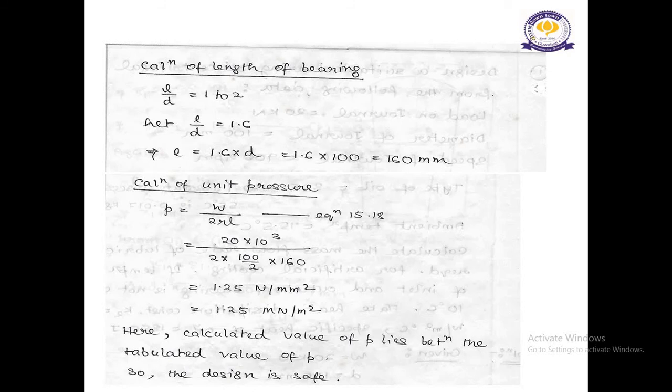Next, we need to calculate the unit pressure. Formula will be P equal to W divided by twice RL. This formula is given in equation 15.18 in design data handbook. From here, W value is given as 20 into 10 to the power 3. R is given as 100 by 2, and L is, we have found out, it is 160. We have got this 1.25 Newton per mm square or 1.25 mega Newton per meter square. Here, calculated value of P lies between the tabulated value of P. So, we can say the design is safe.